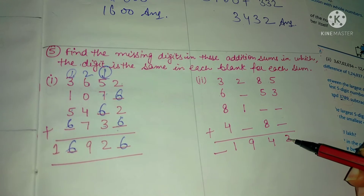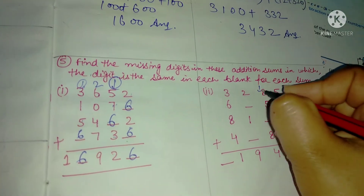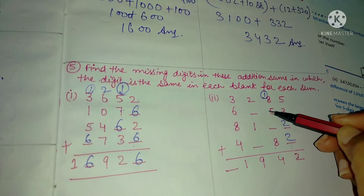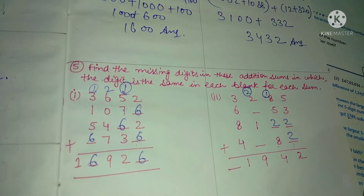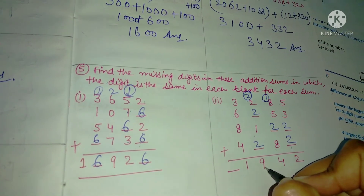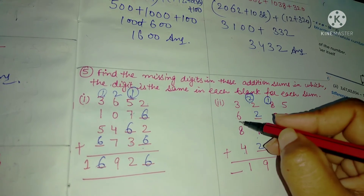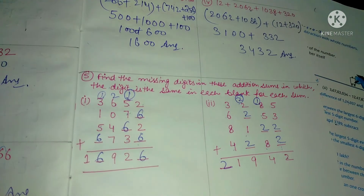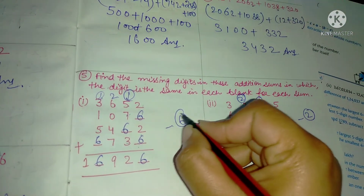Here we need 2, and adding gives 12. Then 8 plus 8 gives 16, carry 1 — then 22, 22, 22, giving 24. Again: 5 plus 4 plus 2 gives 9 here, 8 plus 4 gives 12, then 12 plus 6 gives 18 plus 3 gives 21. The missing digit is 6, and the remaining digits are 2, 2, 2, 1.